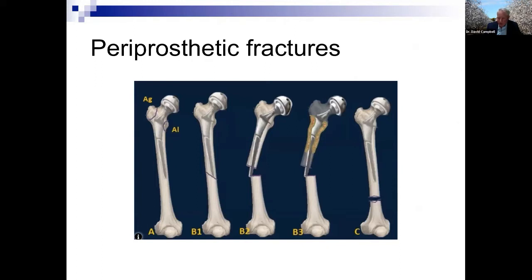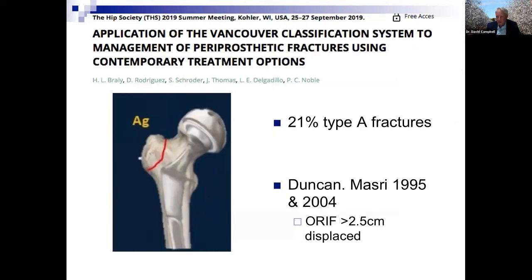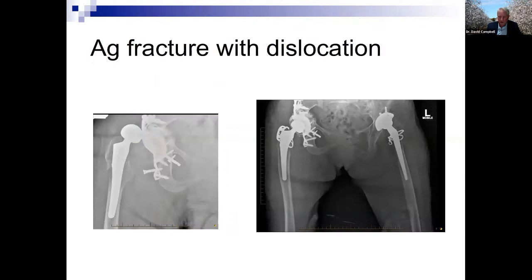Regarding periprosthetic greater trochanter fractures — often overlooked in favor of exciting loose-stem revisions — they constitute about one-fifth of all periprosthetic fractures. Clive Duncan and Baz Masri, when they described trochanteric fractures, proposed leaving them if displaced less than 2.5 cm and the stem was well-fixed — a somewhat conservative approach. Here's an example: an elderly patient with a post-column plate presented with a dislocated hip, likely from a GT fracture allowing dislocation. Simple fixation of the GT fracture stabilized the unstable hip.